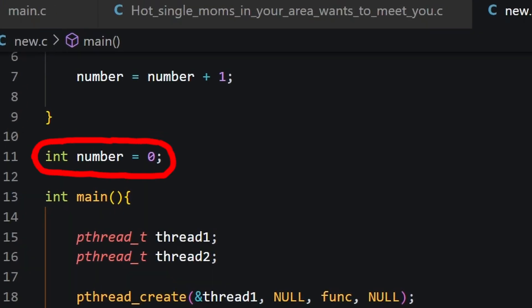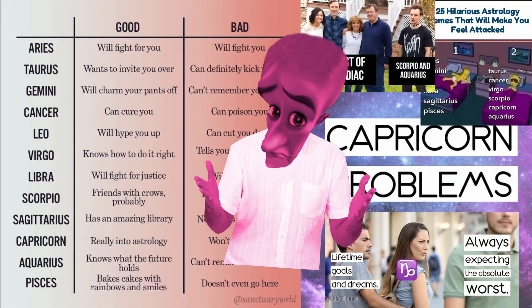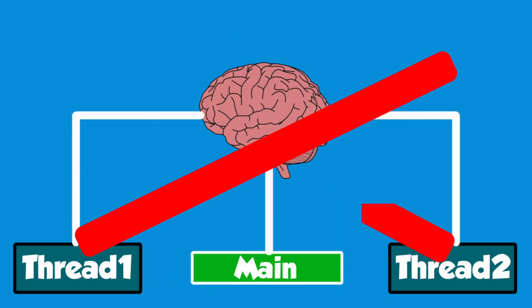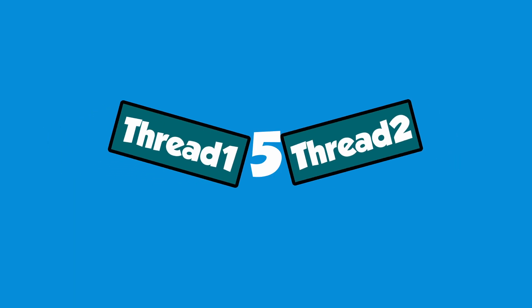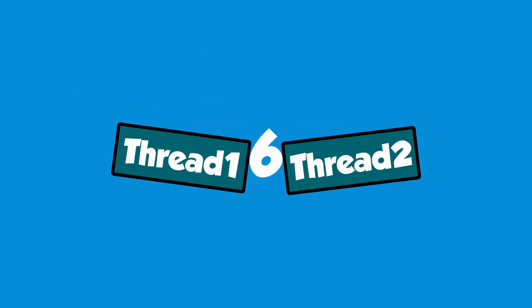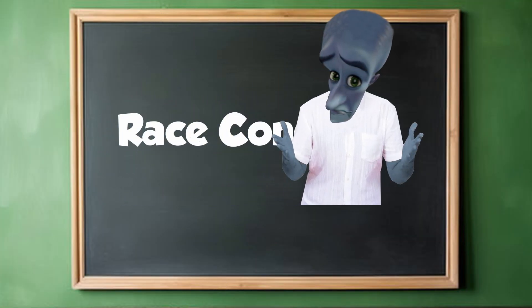As you can see, we can access the number variable declared outside from both threads, and this is because all threads share the same memory. However, this doesn't work correctly all the time. If both threads read the value of the variable at the same time, they will both take the number, increment it, and then assign the variable the same value — instead of taking turns incrementing it one each. This is known as a race condition.